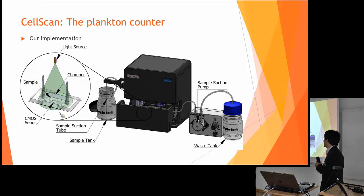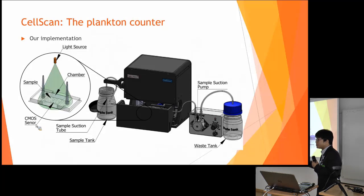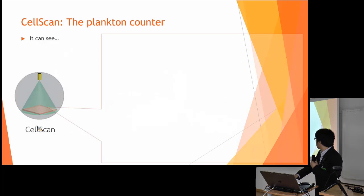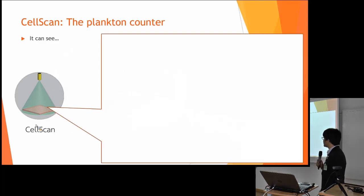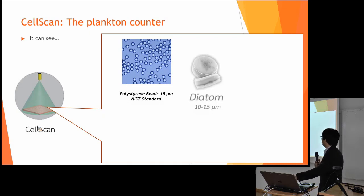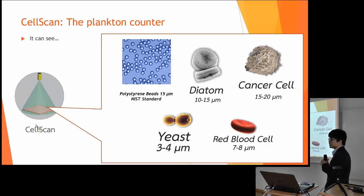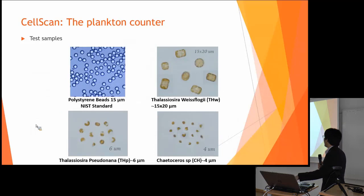Our image management works like this: when the sample flows inside our device, there is a sample channel. We have lights and a CMOS sensor — just like in a camera — that captures the image of the sample as it passes through. Our system can detect various organisms including cancer cells, yeast, and other cell types, with a variety of sample types supported.